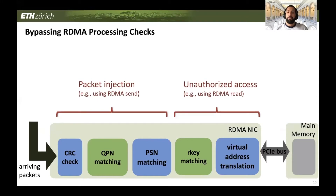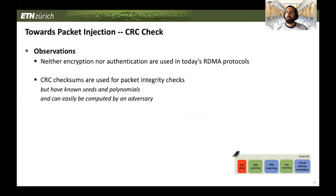For our attack, we want to bypass those checks. For packet injection, we need to bypass the first three checks. For unauthorized memory access, we bypass all five. The first step is to bypass the CRC check. In RDMA, there is no encryption and no authentication — everything is transmitted in clear text. The CRC checksums are used for packet integrity but have known seeds and known polynomials, so they provide no security and can be computed by the adversary.